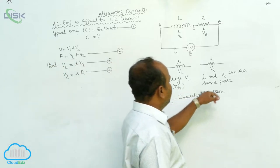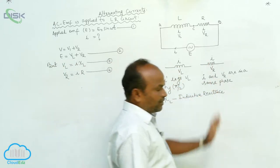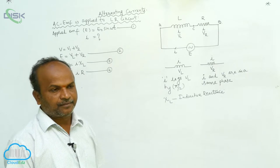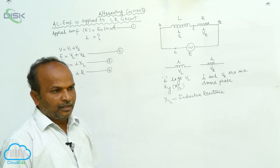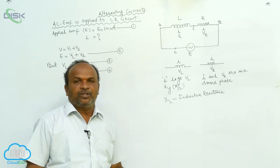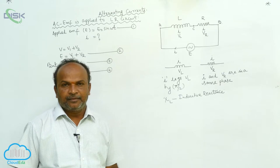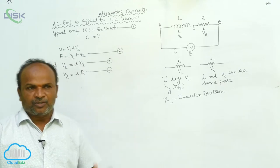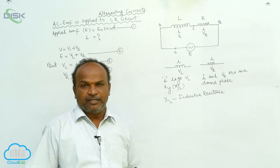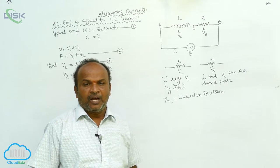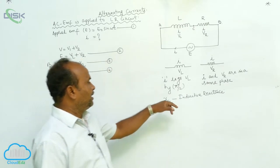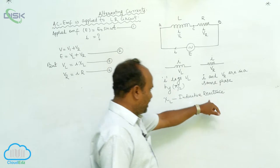XL is called inductive reactance. Inductive reactance is defined as the opposition to the AC current offered by the inductor.